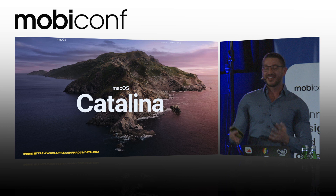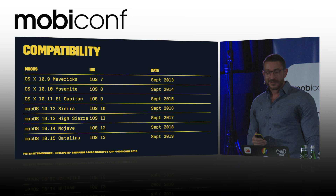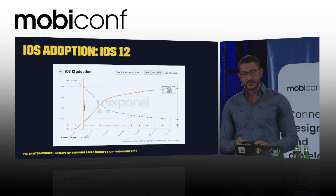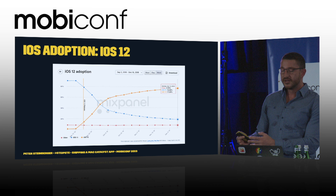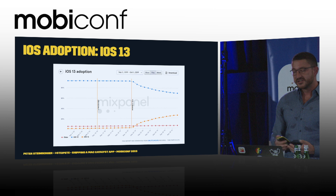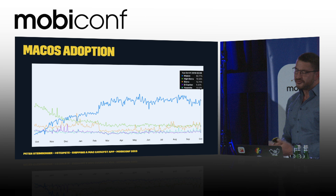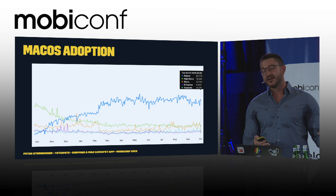Both SwiftUI and Catalyst require macOS Catalina, which just came out last night. Here's a quick overview of Apple's release cycle — they're on a yearly schedule and adoption on iOS is really fast. iOS 12 was released in September 2018 and only four months later had an adoption rate of about 80%. macOS is a different beast. One year after Mojave was released it was at around 60% — one year, not four months — with High Sierra at 20%, and Sierra and El Capitan still at around 10%.